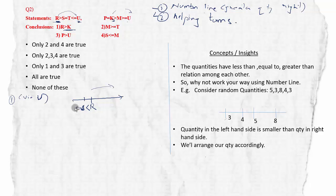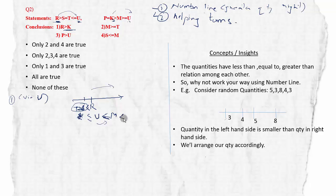Continuing from U: M ≥ U, so M is to the right of U with equal-to. K is greater than M, so K is to the right of M. Now, what is the relation between R and K? R is towards the right of T on one branch, and K is also towards the right of T on another branch. Both are to the right of T, but which comes first we don't know — relation between R and K cannot be determined.